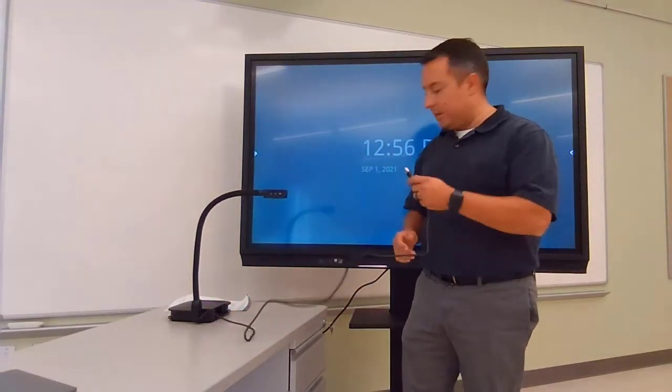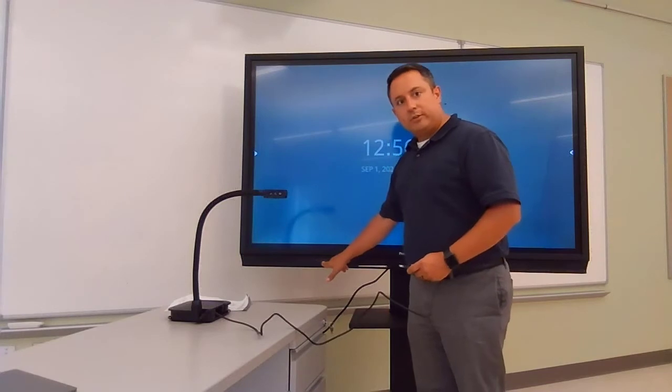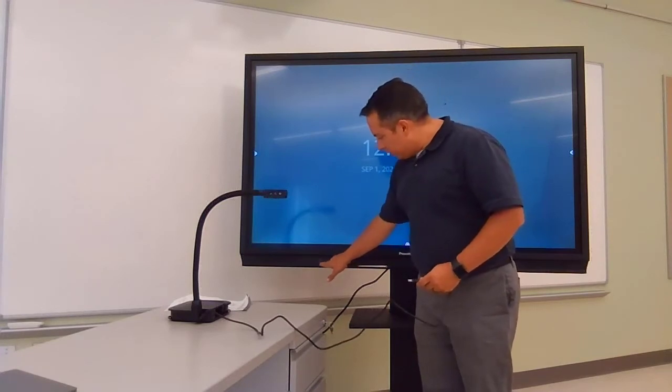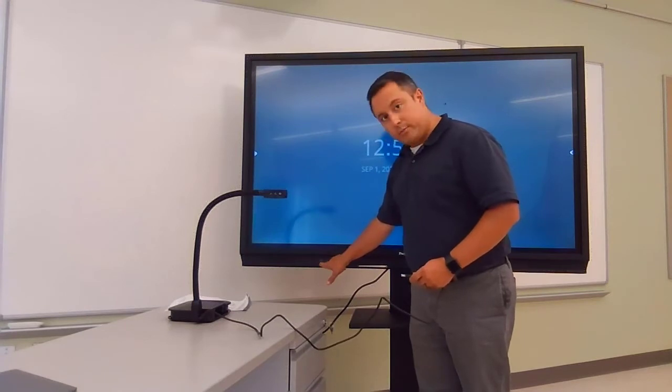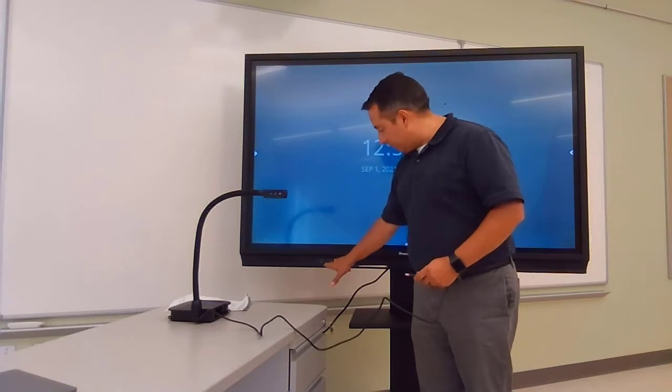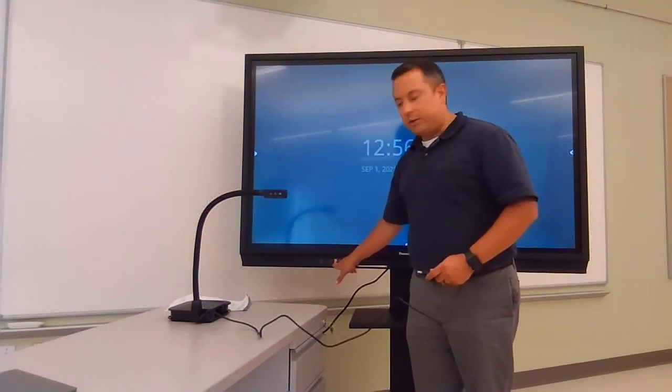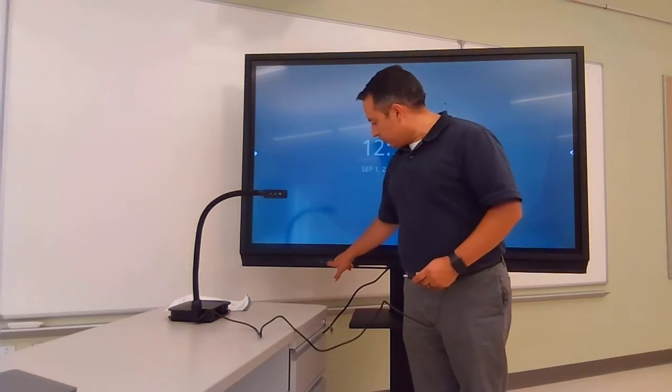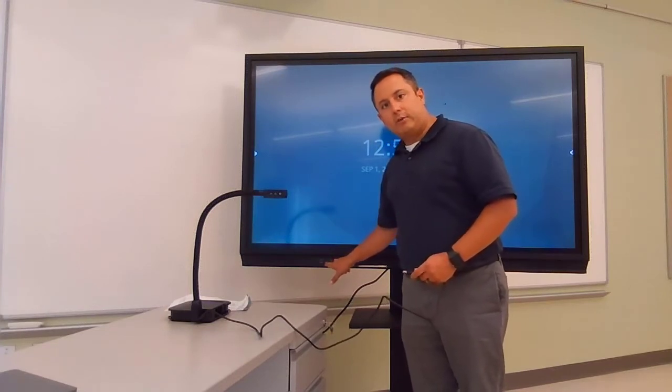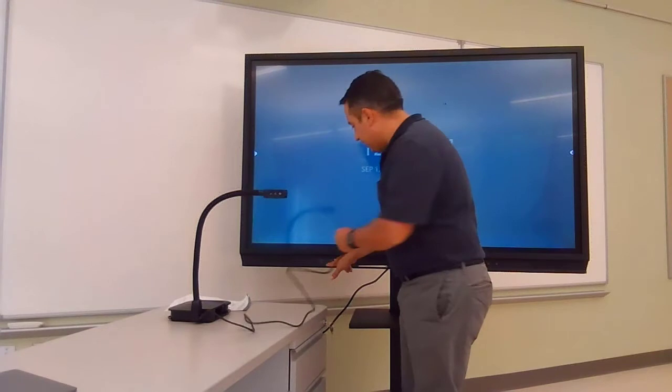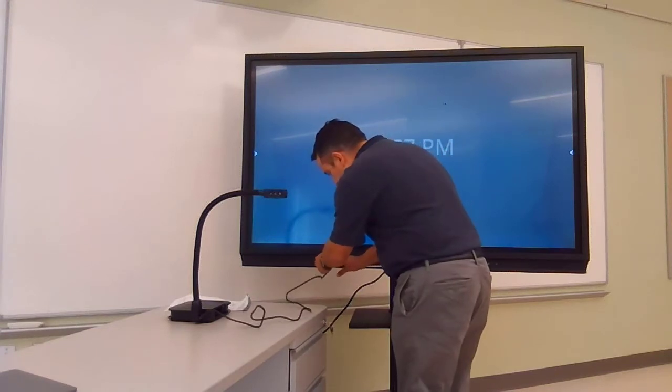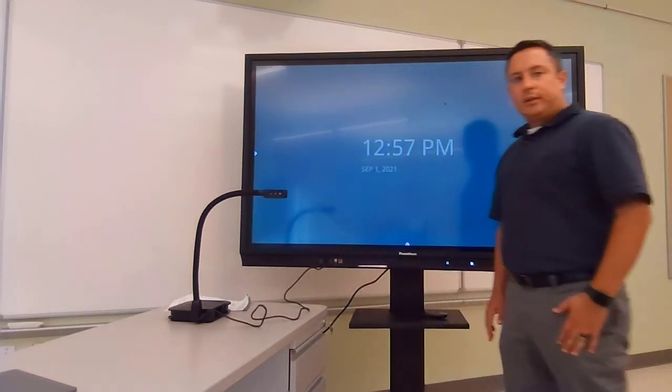What you're going to first want to do is take your document camera set up like we did before. It's connected already to the USB cable here. You've got some inputs on the front of your Promethean board. You've got a blue USB OPS connector - you're not going to plug it into that one. The next one you have is a black regular USB port - that's the one you're going to plug it into.